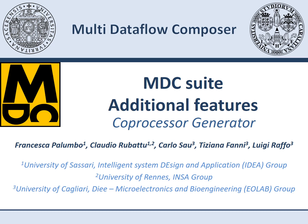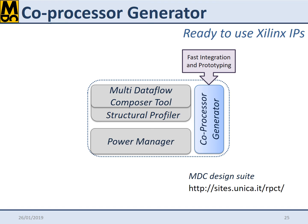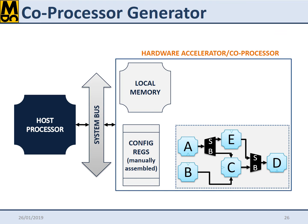The last supported MDC feature is the automatic coprocessing units generation. This feature is meant to guarantee fast system integration, providing as output ready-to-be-used Xilinx IPs. In fact, you can generate flexible and super-optimized reconfigurable datapaths, but it would still be difficult to make them communicate with the other system components without adequate support.